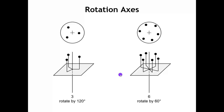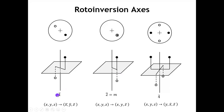Now let's look at the rotoinversion axes. The one-bar rotoinversion axis is rotate by 360 and then invert, which is exactly the same as inverting through the point where the axis passes. The two-bar rotoinversion axis is rotate by 180 and then invert — that takes the point down to a new position, which is the same thing as a mirror plane perpendicular to the two-bar axis.